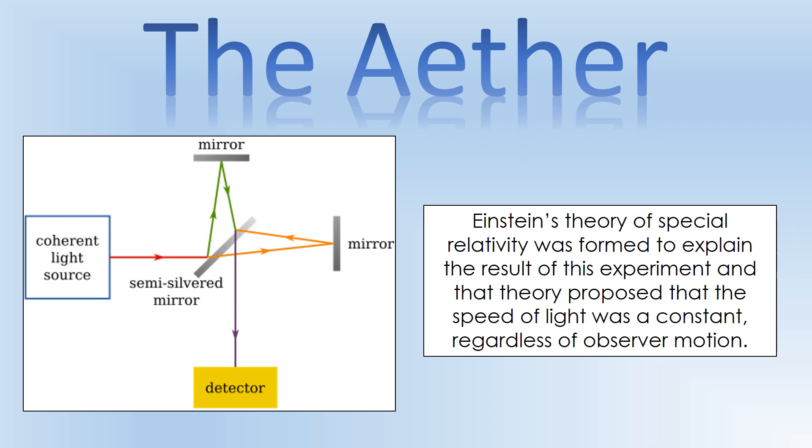So where we're going to go next is looking at Einstein's theory of special relativity. The idea behind this is we need to explain the results of this experiment. And one of the key proposals in Einstein's theory of special relativity is that the speed of light is constant regardless of your motion, which tallies up with what we've seen from this experiment. We'll meet that in the next video.